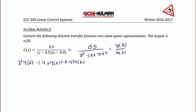which equals 0.5 U of z. Taking the inverse Z-transform and converting to the k domain, or the discrete time domain, I get y(k+2) minus 1.4 times y(k+1) plus 0.45 y(k) equals 0.5 u(k).